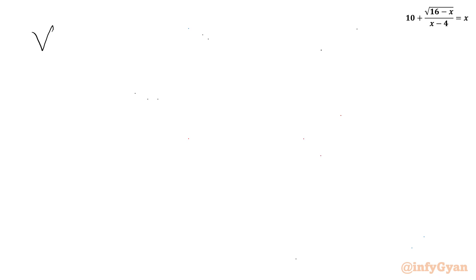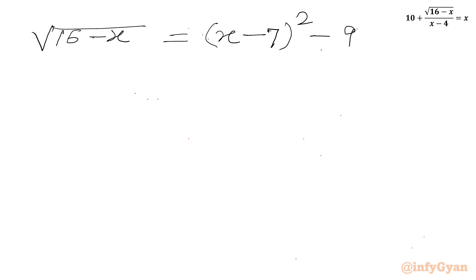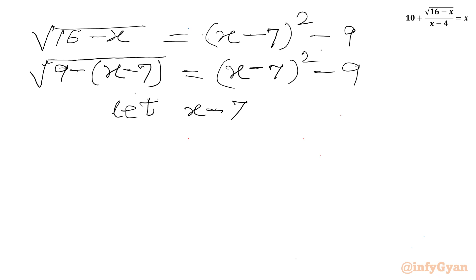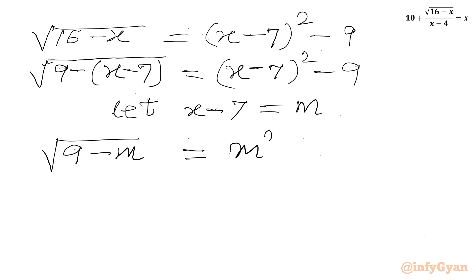Let us write the equation here: square root of (16 minus x) equals (x minus 7) squared minus 9. Now I can write square root of (16 minus x) as square root of (9 minus (x minus 7)), which gives us square root of (16 minus x). On the right hand side we write (x minus 7) squared minus 9. Now we have (x minus 7) on both sides, so let us say x minus 7 equals m. So I can write our equation: square root of (9 minus m) equals m squared minus 9.